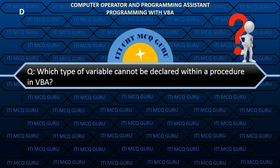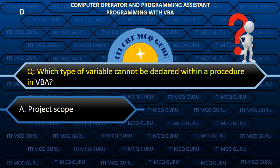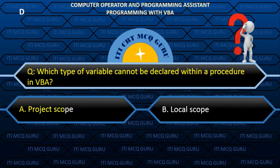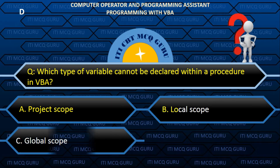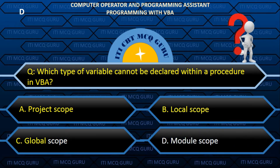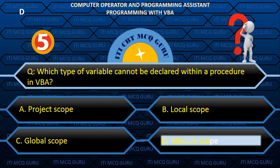Which type of variable cannot be declared within a procedure in VBA? Answer: D. MODULE SCOPE.